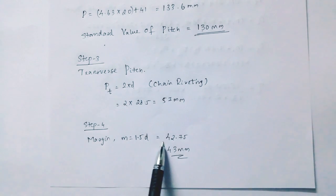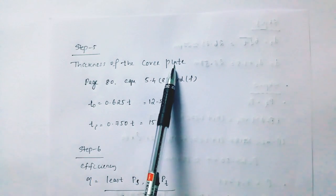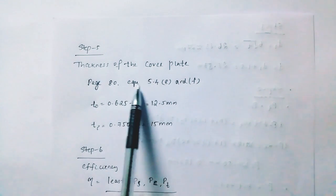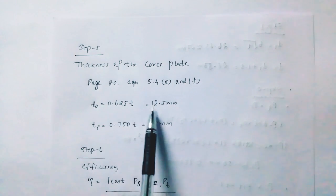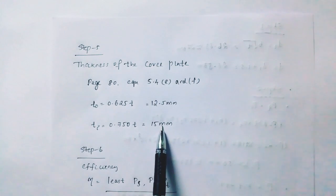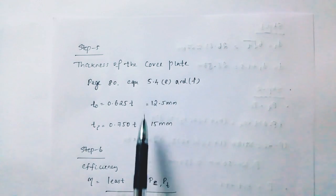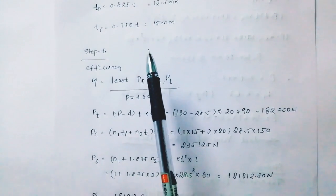Step 4 is margin. Step 5 is the thickness of the cover plate. We use t1 equals 0.625t and t2 equals 0.875t. We choose 15 mm for the cover plate.